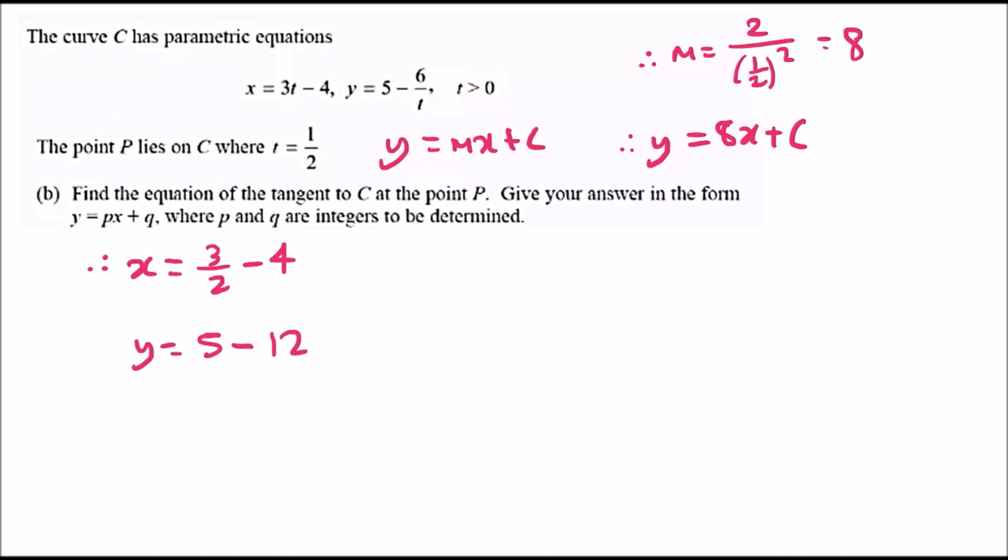Put this all in the calculator. The first one will give us negative 5 over 2, and the y solution should give us negative 7.